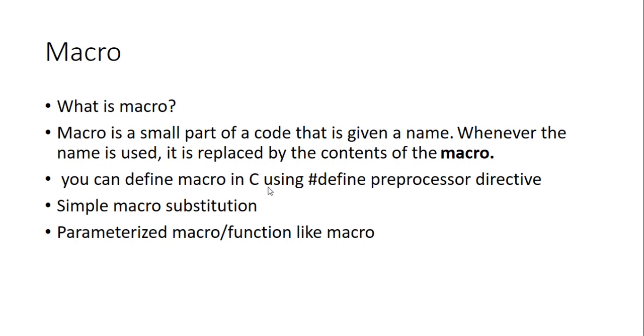You can define a macro in C using #define. When you are defining it, write this #define - it is a preprocessor directive. And here we are using two methods: simple macro substitution and parameterized macro substitution.